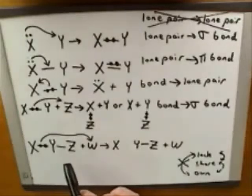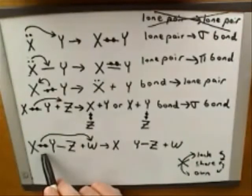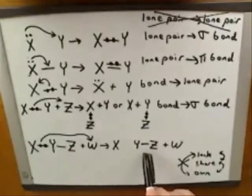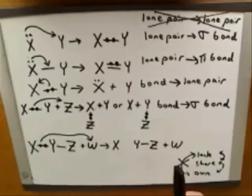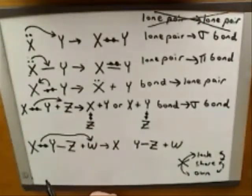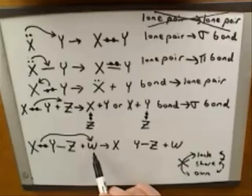The arrow dictates that we need to erase the bond between X and Y, but there's no reason to erase the bond between Y and Z, so I'm going to leave that bond in there. Now, where is this pair of electrons going to? The head of the arrow is pointing to W, so clearly W is going to gain possession of the electrons.